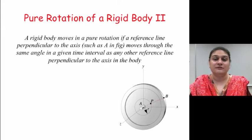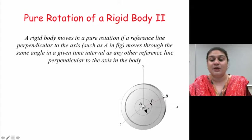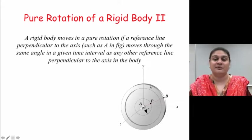So pure rotation of a rigid body can also be defined as a rigid body moves in pure rotation if a reference line perpendicular to the axis, such as A in the figure, moves through the same angle in a given time interval as any other reference line perpendicular to the axis in the body. So this point P going around in a circle should cover the same angle no matter where it is on the circle.